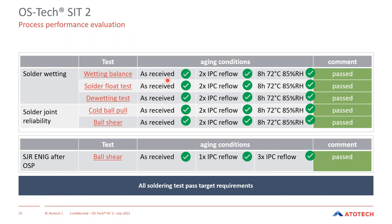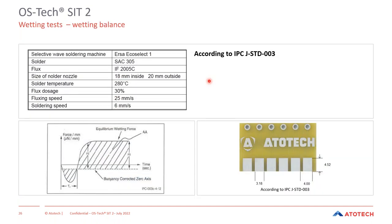Now looking at the overall process performance of the OSP finish. Testing included wetting balance tests, solder flow tests, wetting tests, and solder joint reliability cold ball pull and ball shear tests. We also tested solder joint reliability of the ENIG after the OSP process to confirm that running the OSP process does not attack the ENIG finish. Testing was done as received, after two times IPC reflow, and after humid aging. All tests passed.